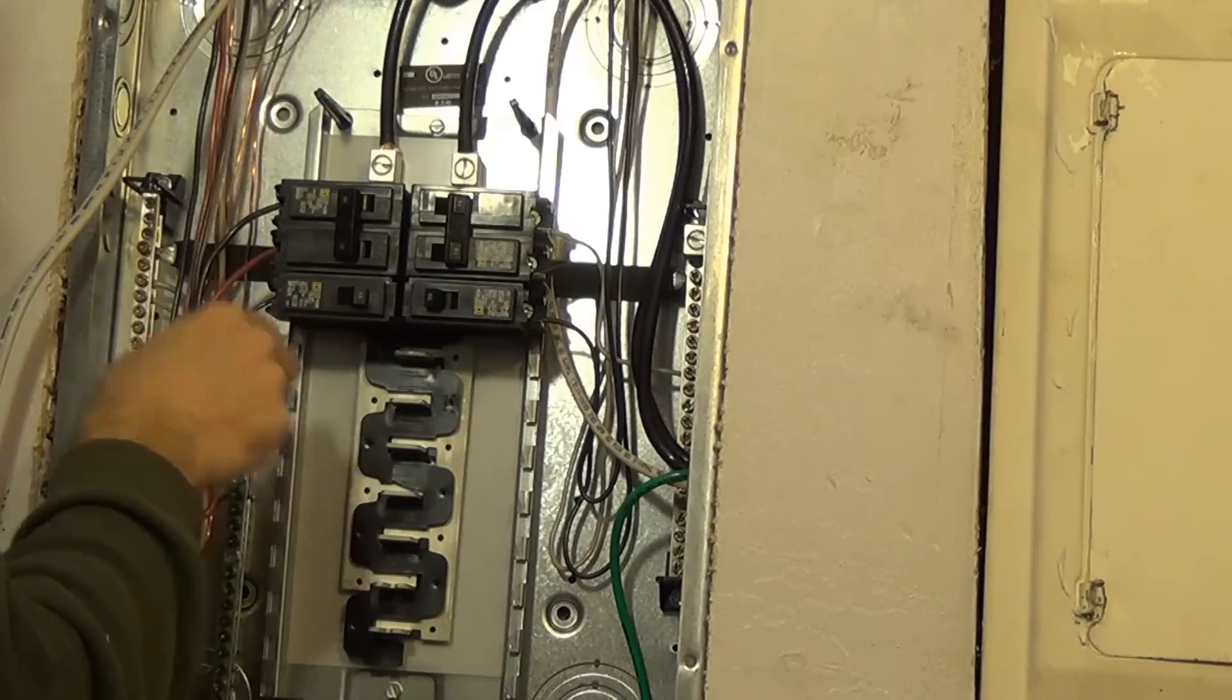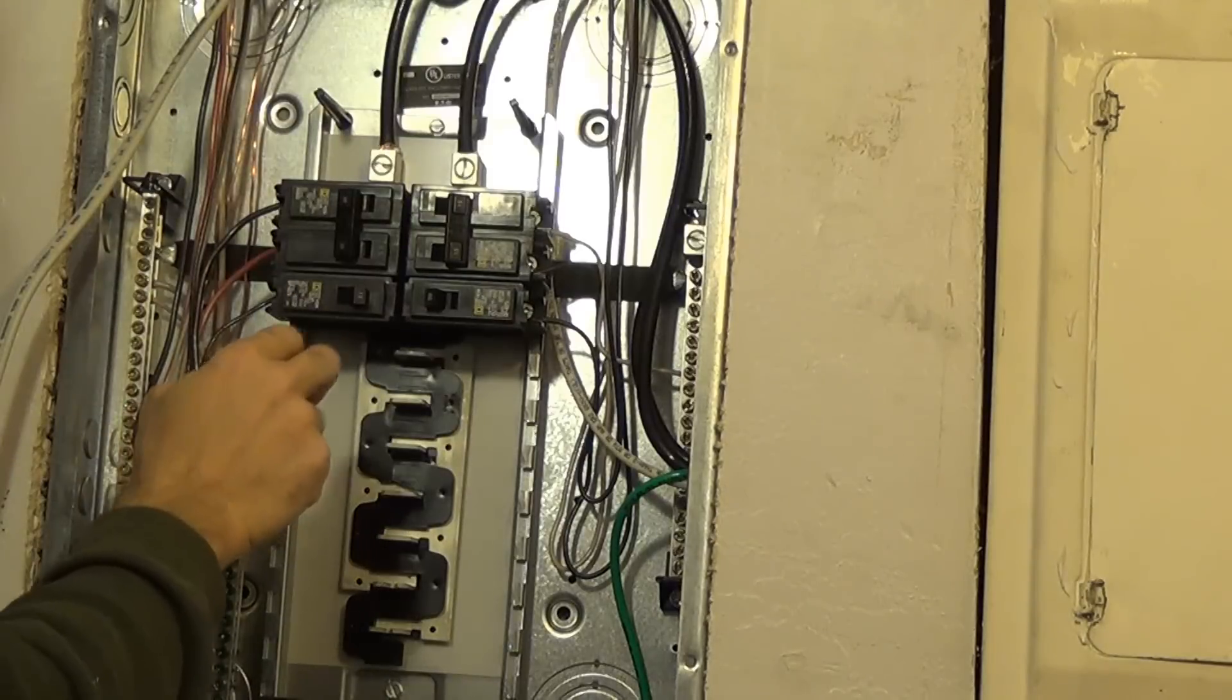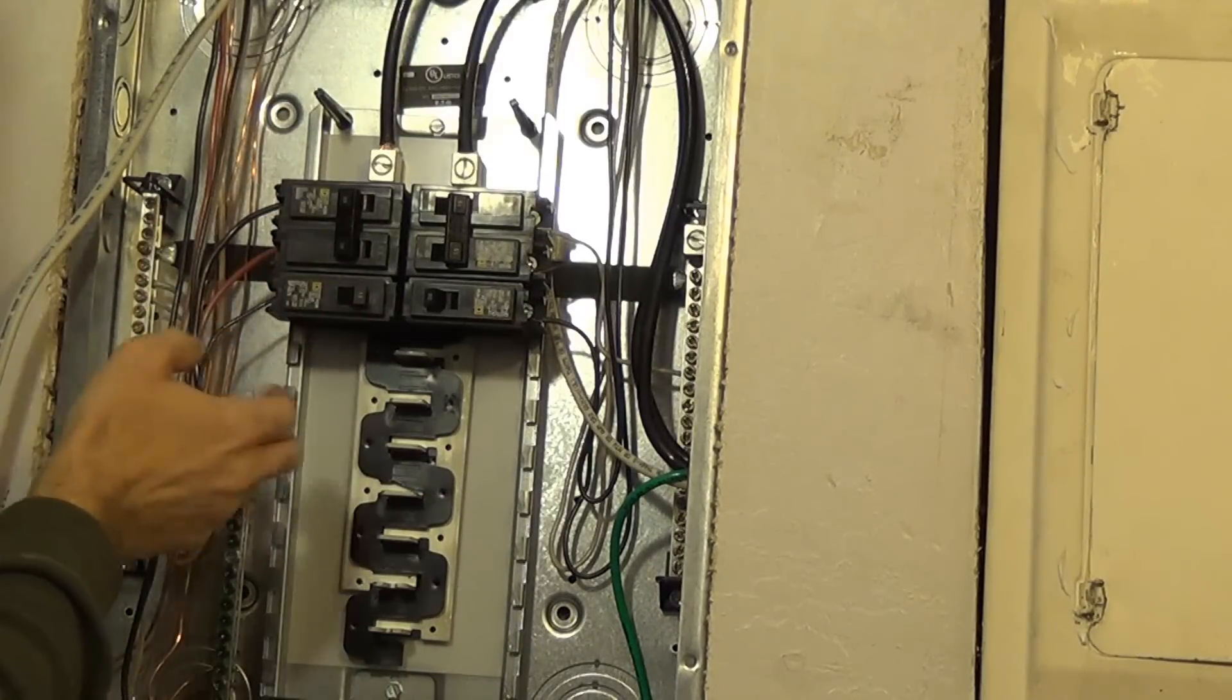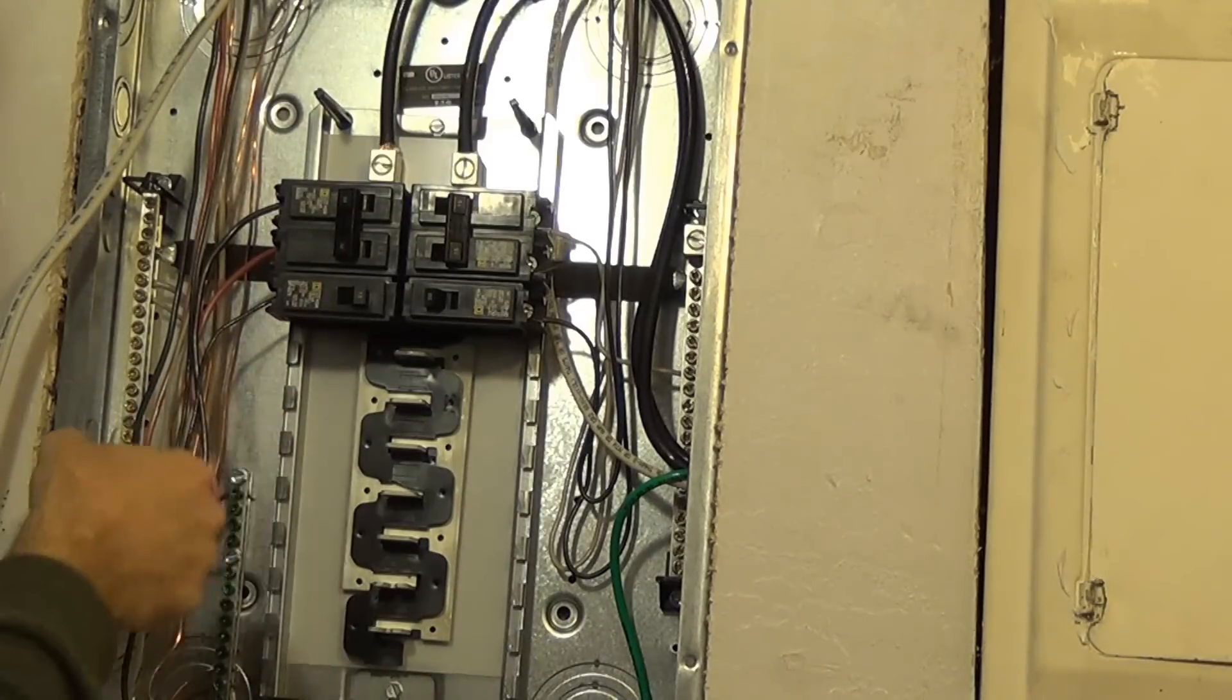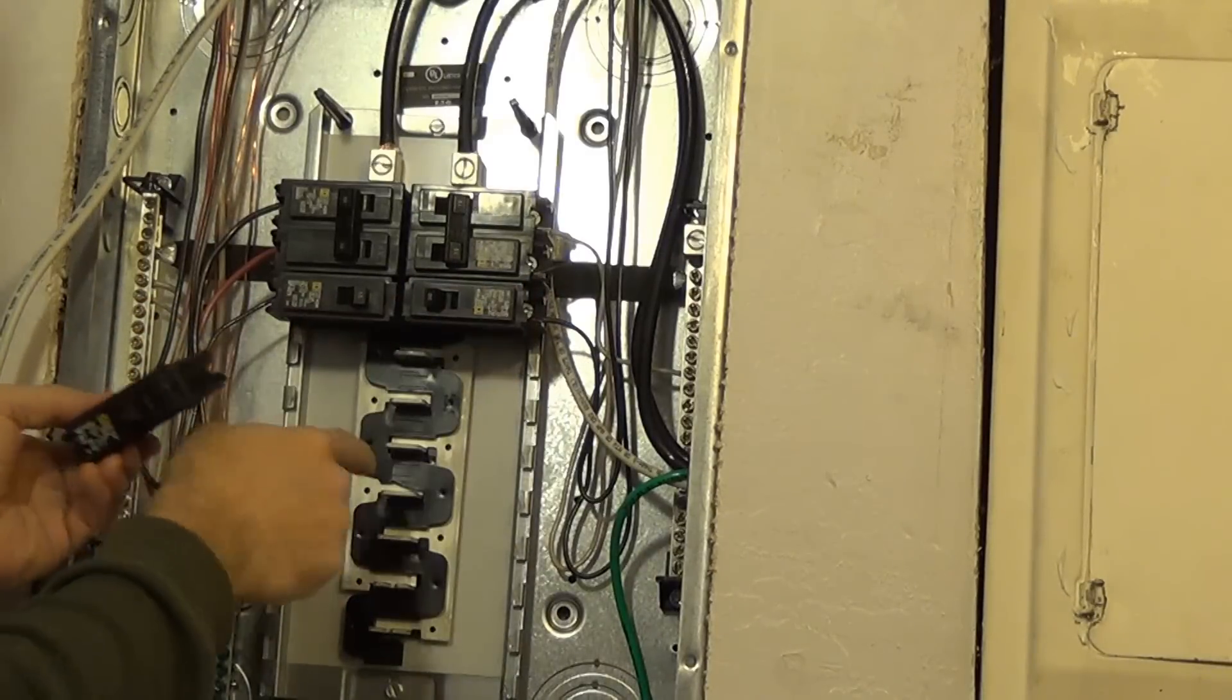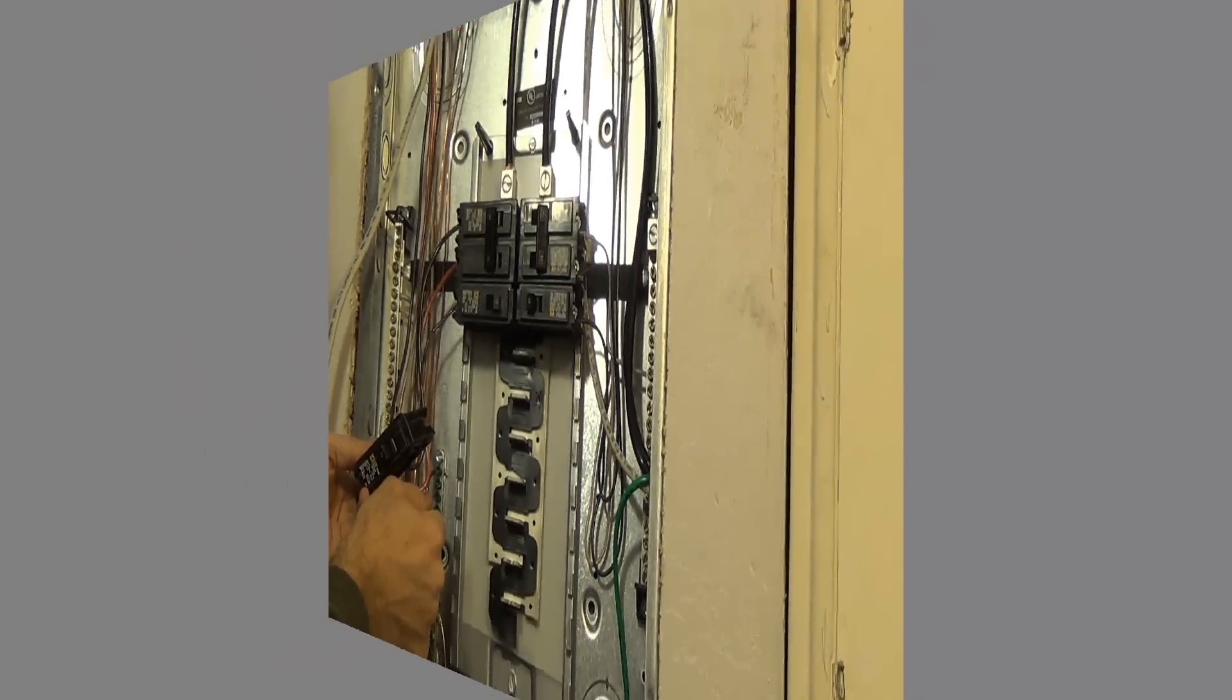The reason they do this is for your 240 volt. Since they're not in phase, if you hook one breaker into two of these, you will get 240 volts. That's why they do that. But it doesn't really matter for the 120 volt—it doesn't matter which one you connect into, it will work just as fine.